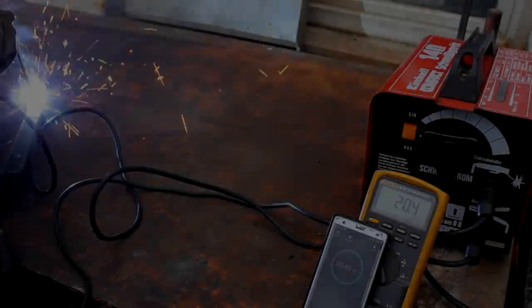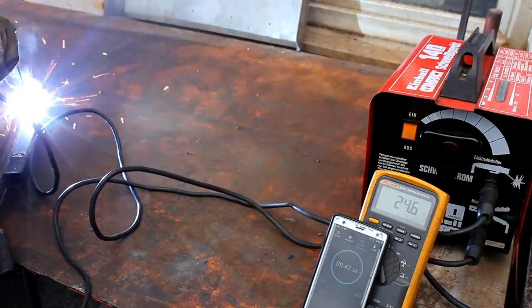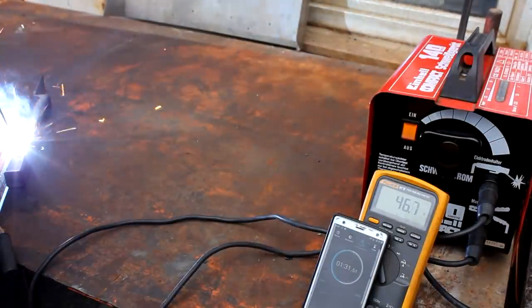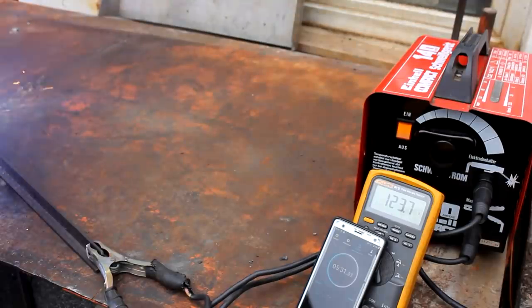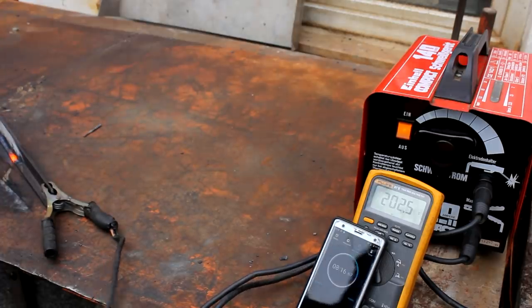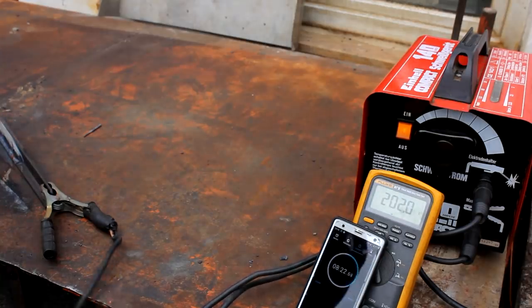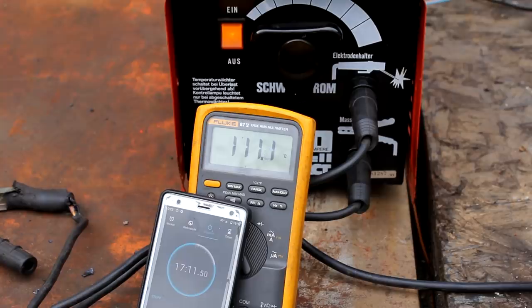We start welding with the transformer at the current ambient temperature of 15 degrees Celsius. I weld at the maximum settings as continuously as possible. After one minute we are approaching 50 degrees Celsius, after five minutes almost 125, and after less than eight minutes of continuous operation the transformer has reached 200 degrees Celsius and the temperature switch has disconnected the primary from the mains.